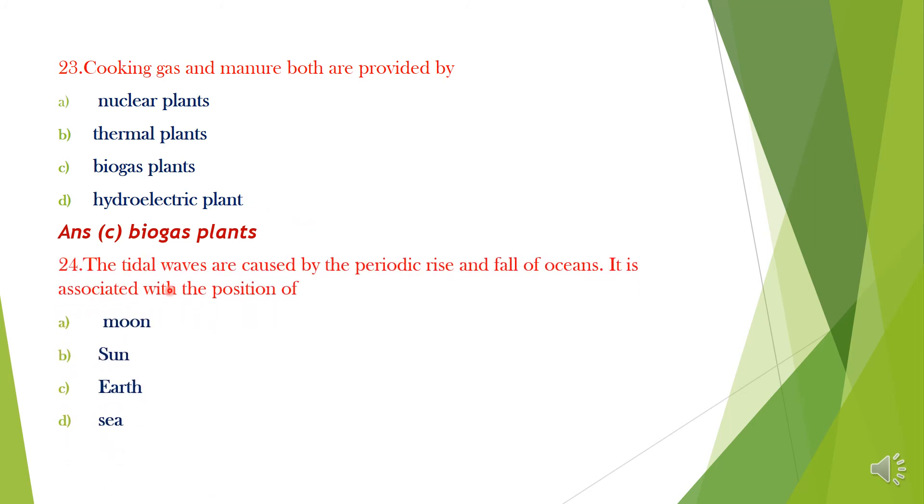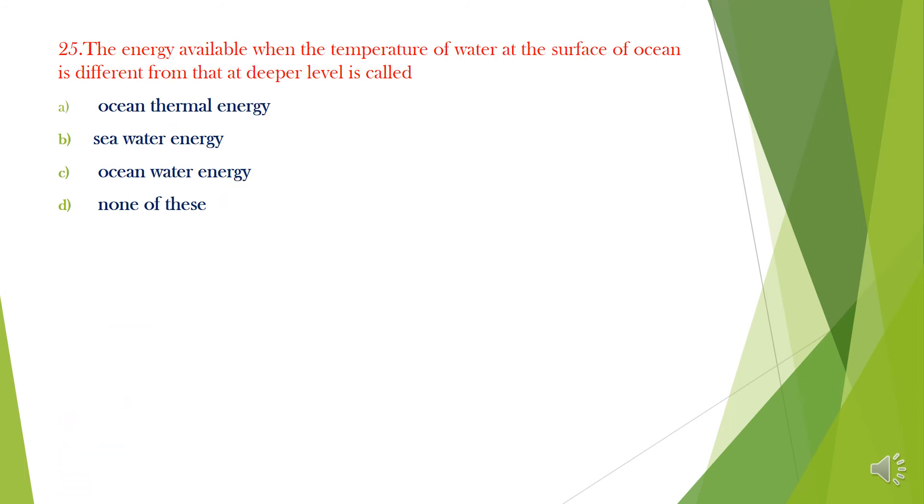Question 24. The tidal waves are caused by the periodic rise and fall of oceans. It is associated with the position of: A. Moon, B. Sun, C. Earth, D. Sea. Answer is option A, Moon.